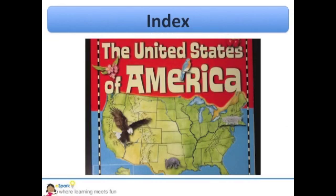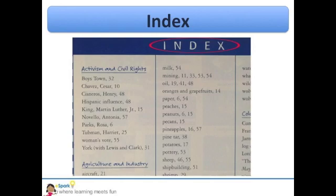Not only do text features help you with science articles like the one I read about the brain, but they can also help you with social studies books too. Today at school, I was reading a book about the United States of America by Millie Miller and Cindy Nelson. It had interesting facts about each of the 50 states. At the end of the book is an index. An index is an alphabetical list of all the items in the book. This one was organized by subheadings like activism and civil rights and then by individual item. During class, I was reading about Martin Luther King Jr., but I can't remember what page that was on. I can look in the index and find out really quickly because it's alphabetically ordered. The part about Martin Luther King Jr. is on page 15.